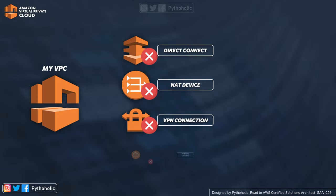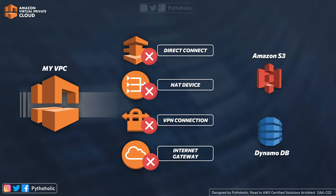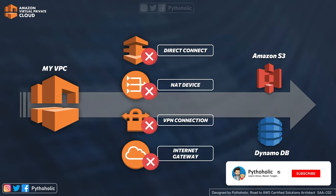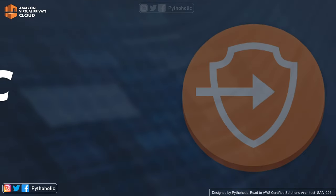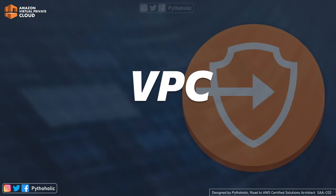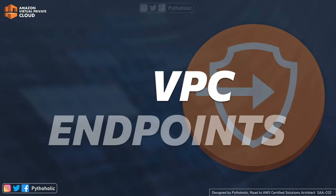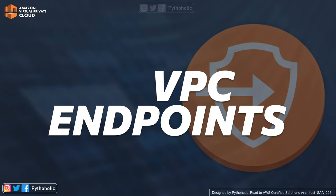If you want to enable a connection between your VPC and other AWS services like S3 and DynamoDB, but you want that to be private and you don't want to use Direct Connect, gateways, or VPN, then we might need something more. Thanks for joining in today — let's talk about VPC endpoints. If you're ready, let's begin.